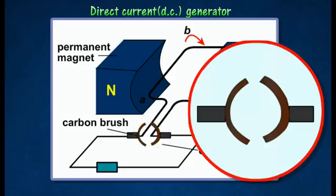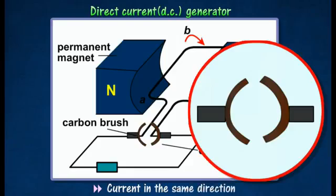As a result, the current flowing through the external circuit will always flow in the same direction, even though the direction of the current induced in the coil changes every time the coil passes through the vertical position.